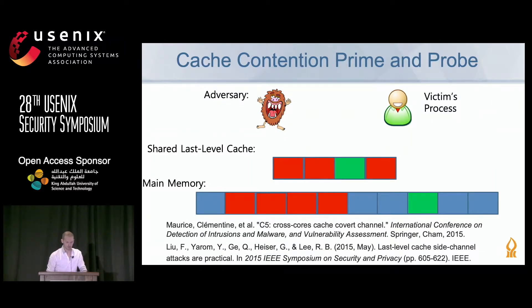Let me talk about prime and probe. We have a memory buffer that the adversary allocates in main memory. When it accesses every cache line in a loop and then the victim uses their process, the adversary can use a timing attack to identify features about the victim's process.